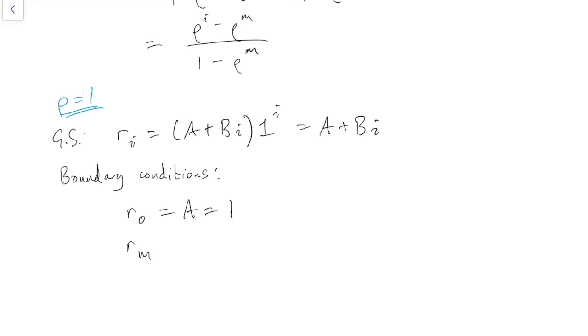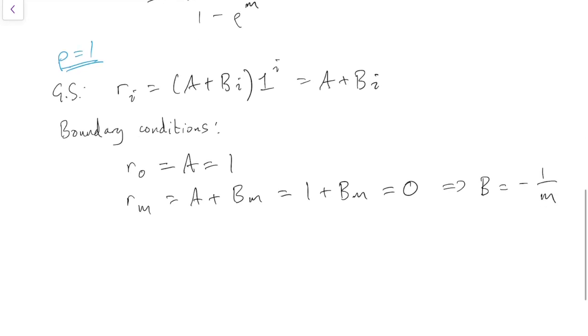And rm, well, that's a plus bm, but we already know that a is 1. And that has to be equal to 0, which means that b must be equal to minus 1 over m. And thus we get the solution when rho equals 1 is ri equals a, 1 plus b, minus 1 over m, i. And so you can write that as 1 minus i over m, or if you prefer, you can write it as m minus i over m. And that's the solution when rho equals 1.